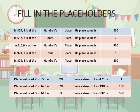Coming to the exercise: in 329, 3 is at the 100s place and its place value is 300. In 537, 7 is at the 1s place and its place value is 7. In 916, 9 is at the 100s place and its place value is 900. I hope you have understood the questions — do accordingly.